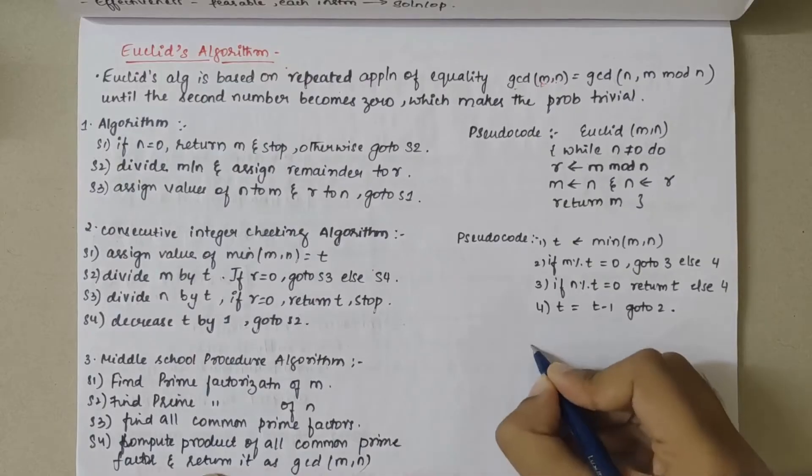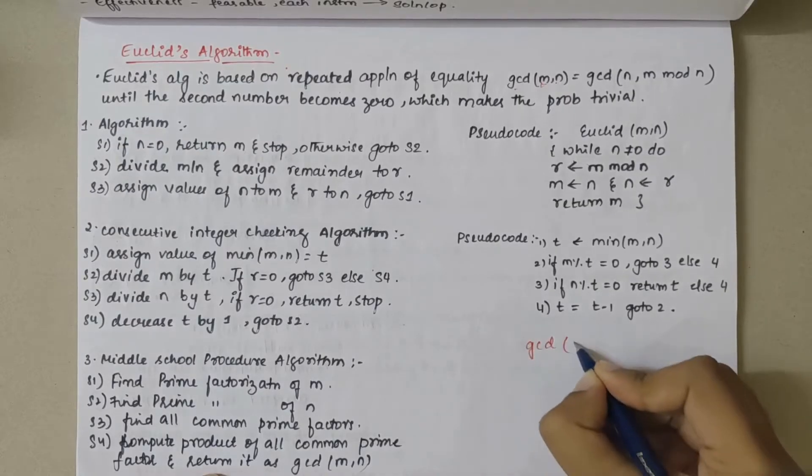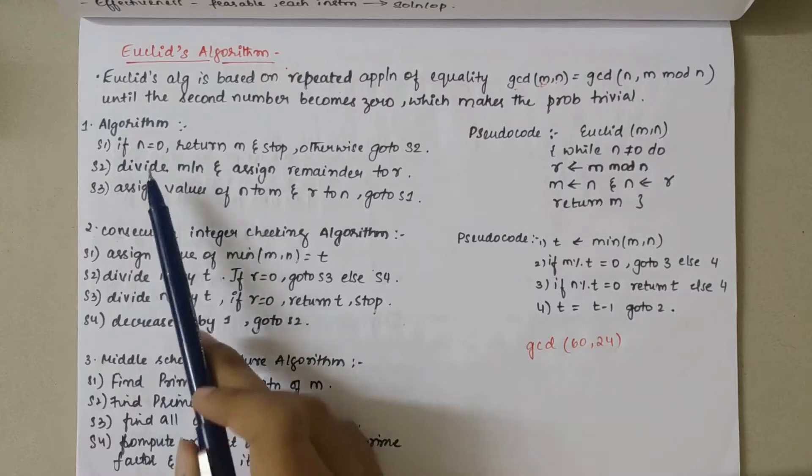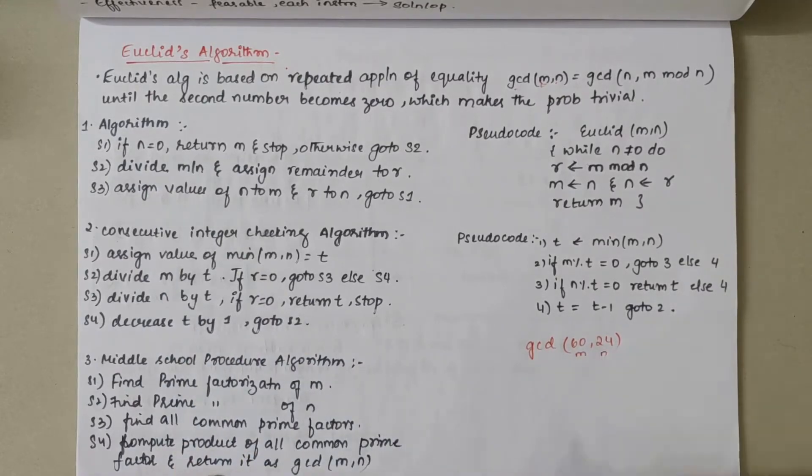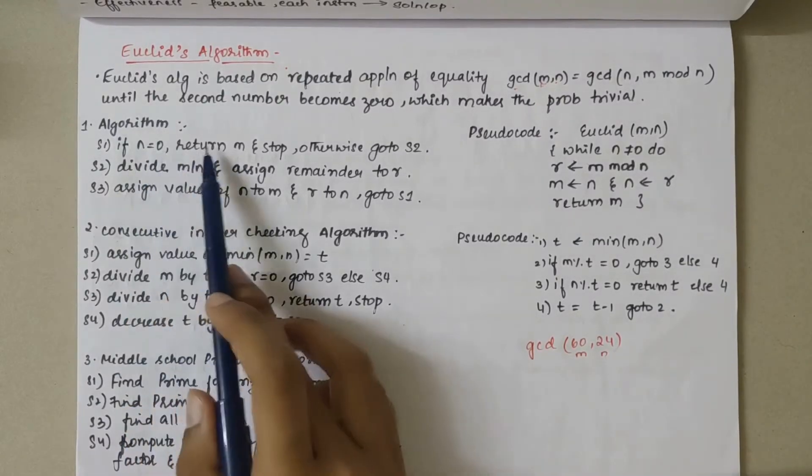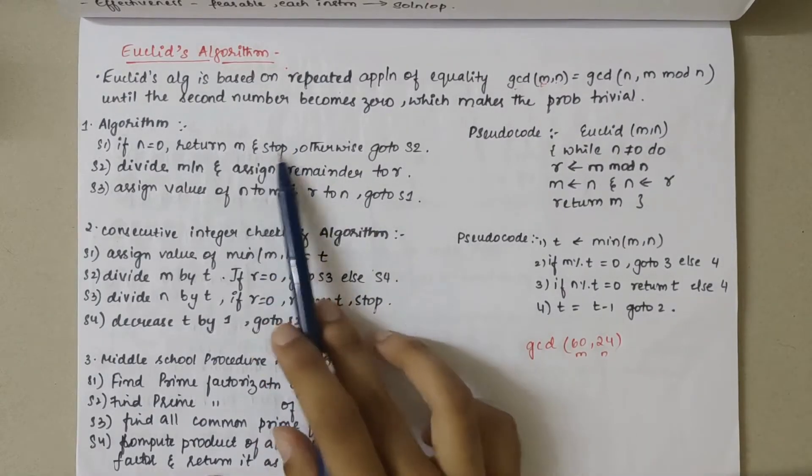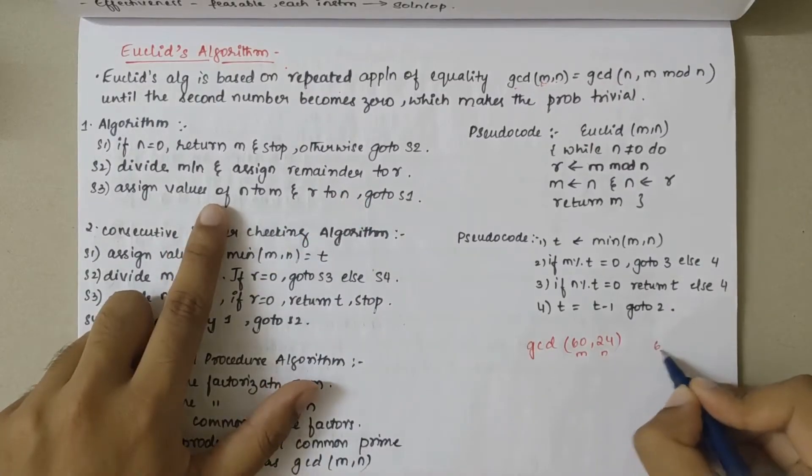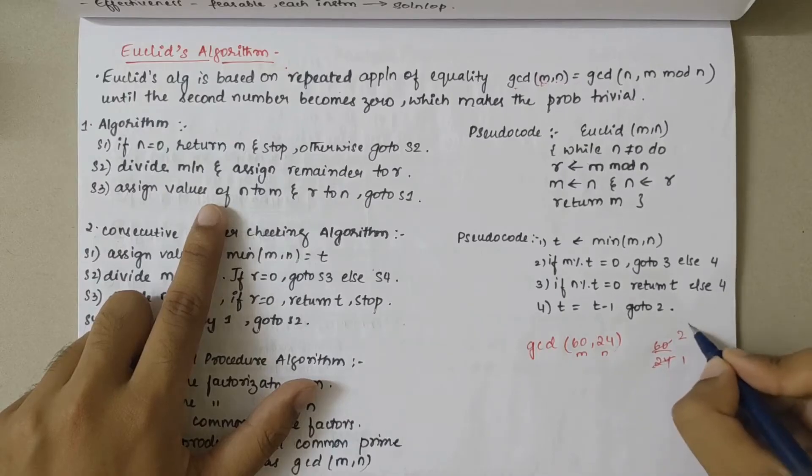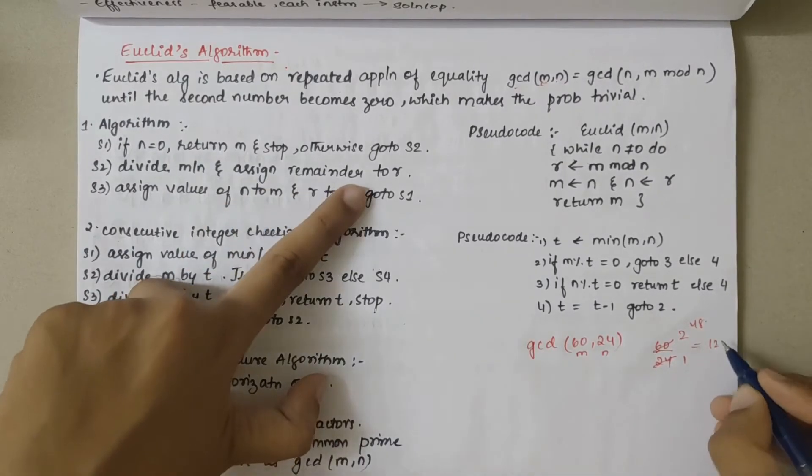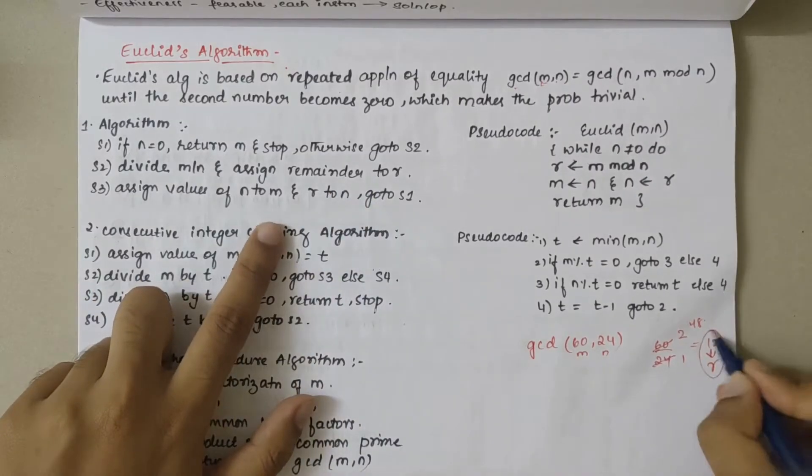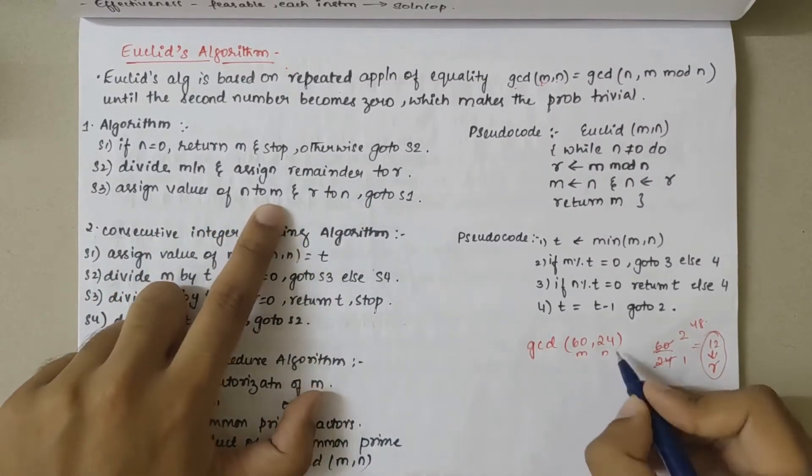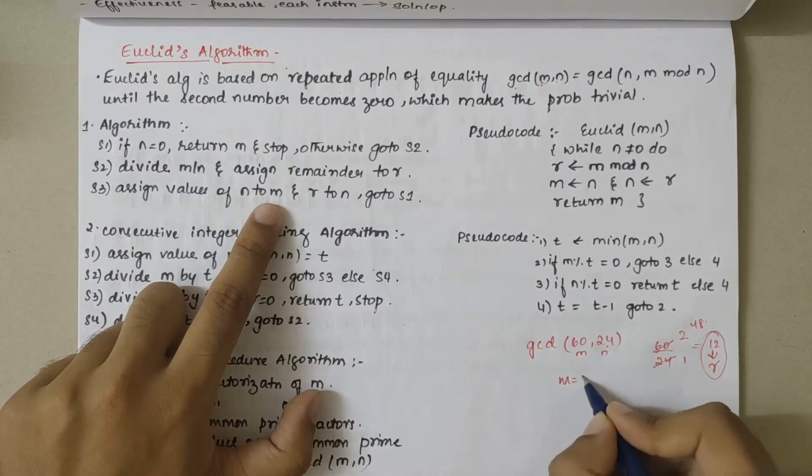Let me consider a question: find GCD of 60 comma 24. First step says we'll take m as 60 and n as 24. If n is zero, return m and stop. Otherwise go to step two. Divide m by n and assign remainder to r. 60 by 24: 24 ones are 24, 24 twos are 48. 60 minus 48, we have remainder as 12. Now assign n to m, that is 24, and r to n.